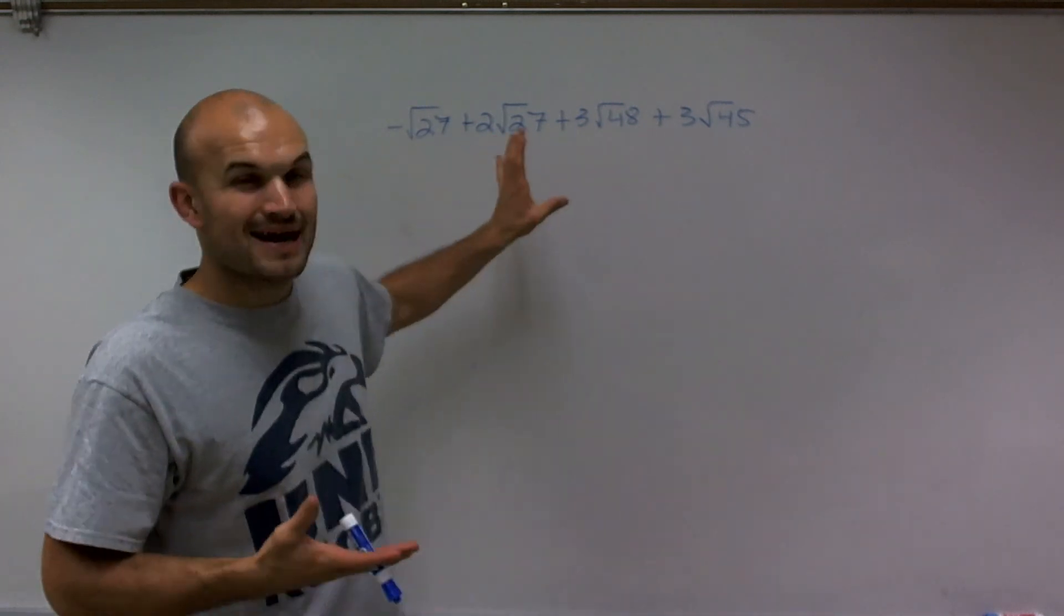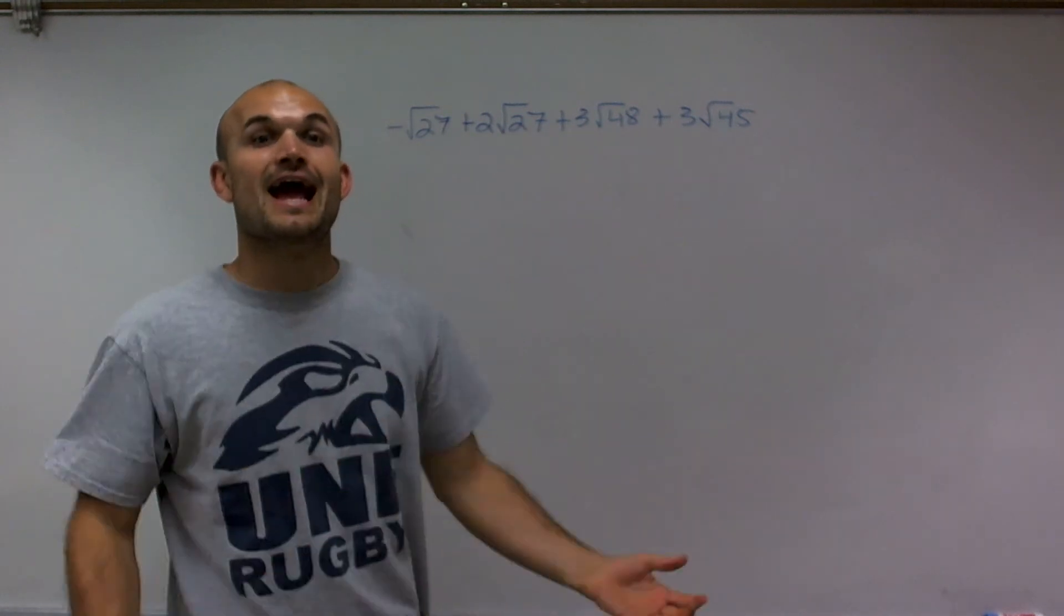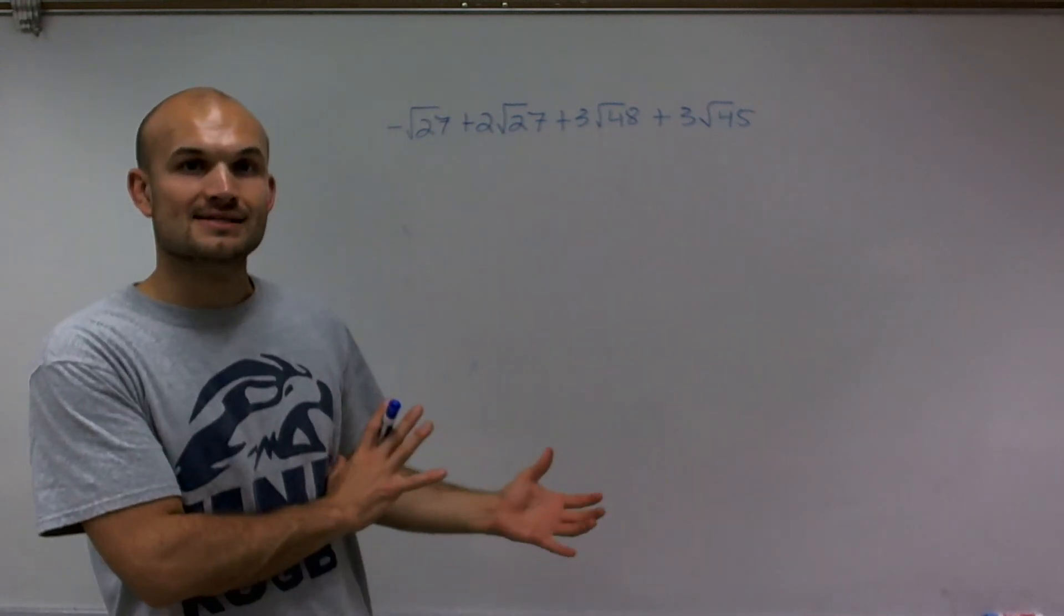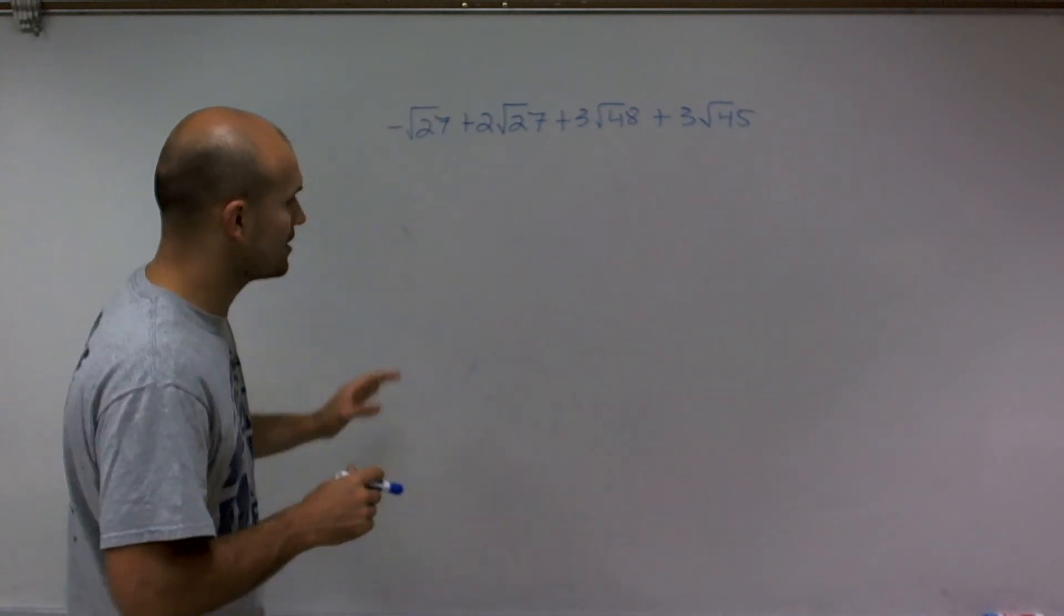So when I have a problem like this, where I have so many different terms, I'm going to simplify everything and then see what I have at the end. And then all my like terms at the end, I'm going to combine.